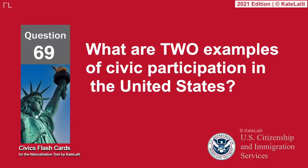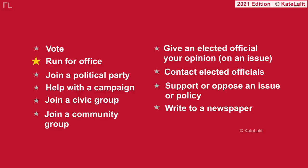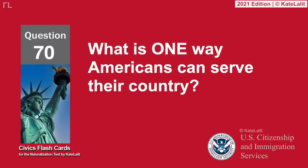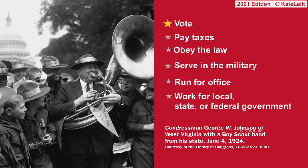What are two examples of civic participation in the United States? Vote. Run for office. Join a political party. Help with a campaign. Join a civic group or community group. Give an elected official your opinion on an issue. Contact elected officials. Support or oppose an issue or policy. Write to a newspaper. What is one way Americans can serve their country? Vote. Pay taxes. Obey the law. Serve in the military. Run for office. Work for local, state, or federal government.